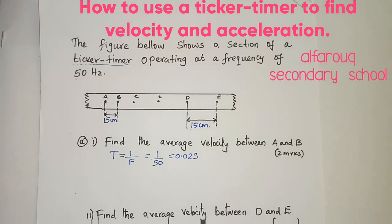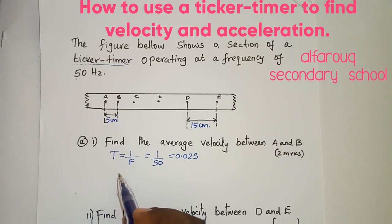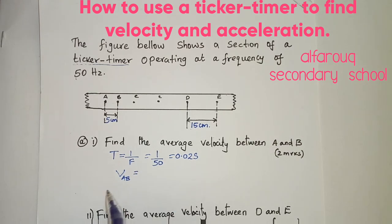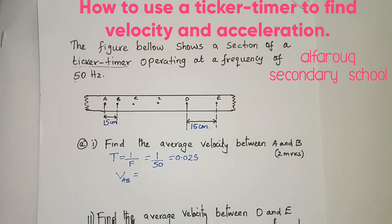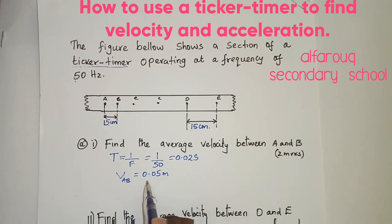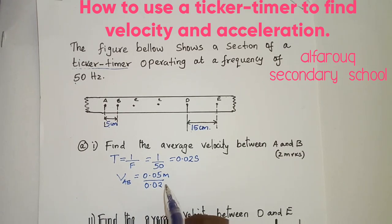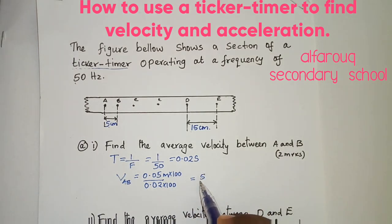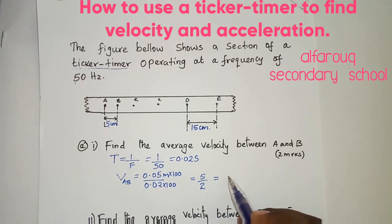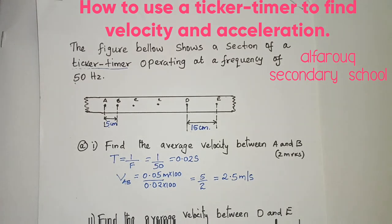Now let us find the average velocity between A and B. Velocity between A and B equals the distance between A and B divided by the time taken between A and B. The distance is 5 centimeters, which is 0.05 meters, divided by 0.02 seconds. Multiplying through to remove the decimal gives 5 divided by 2, so the average velocity between A and B is 2.5 meters per second.